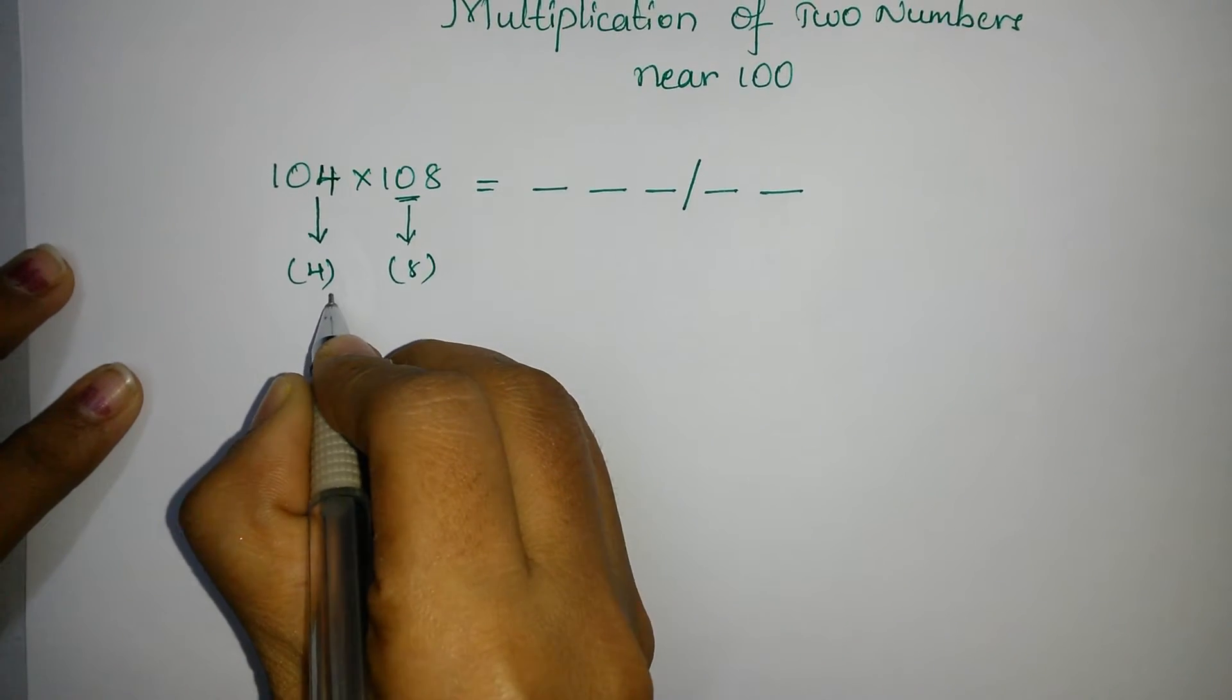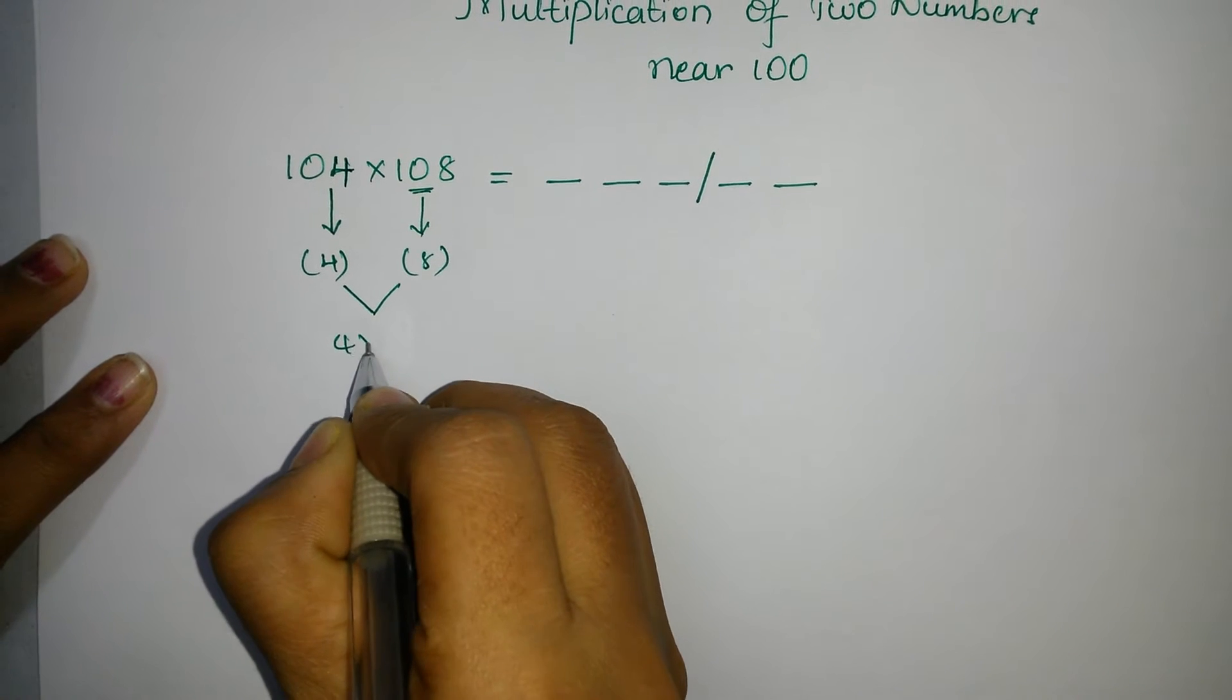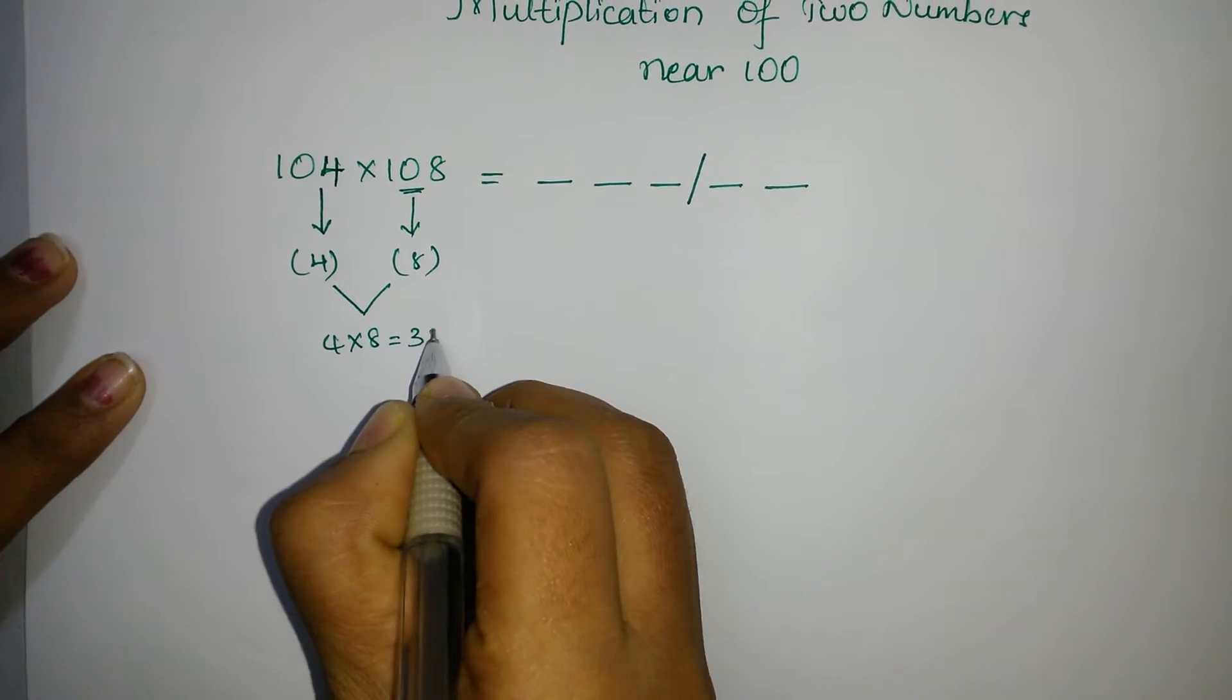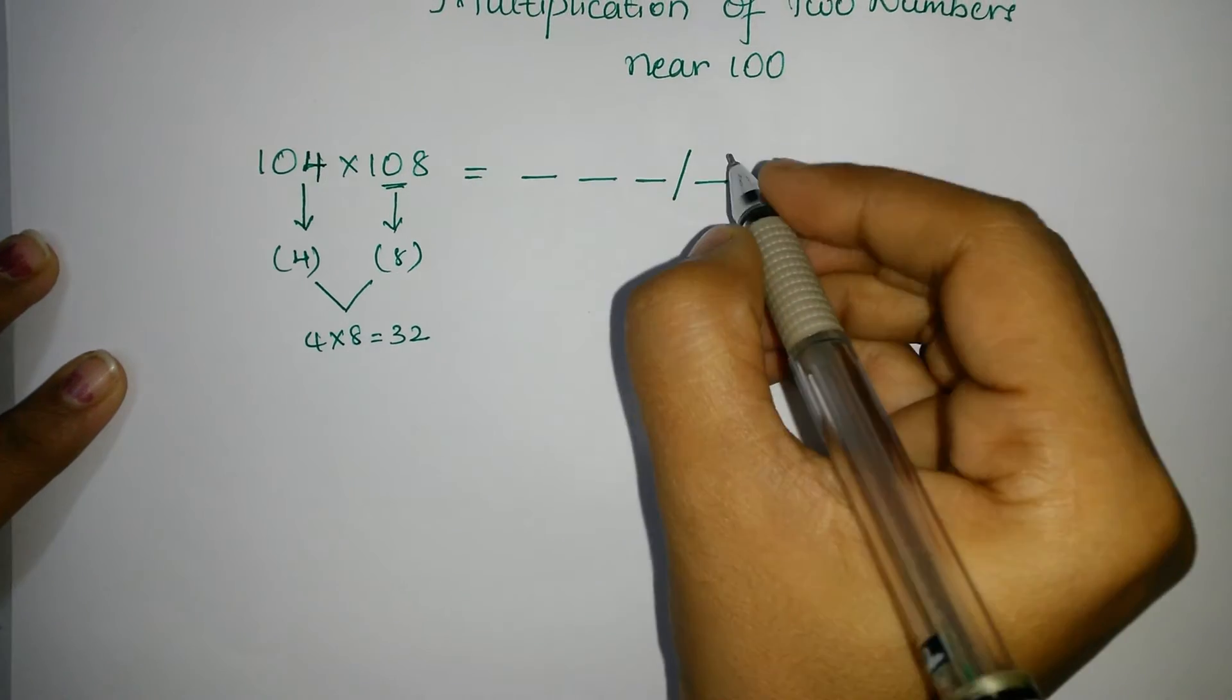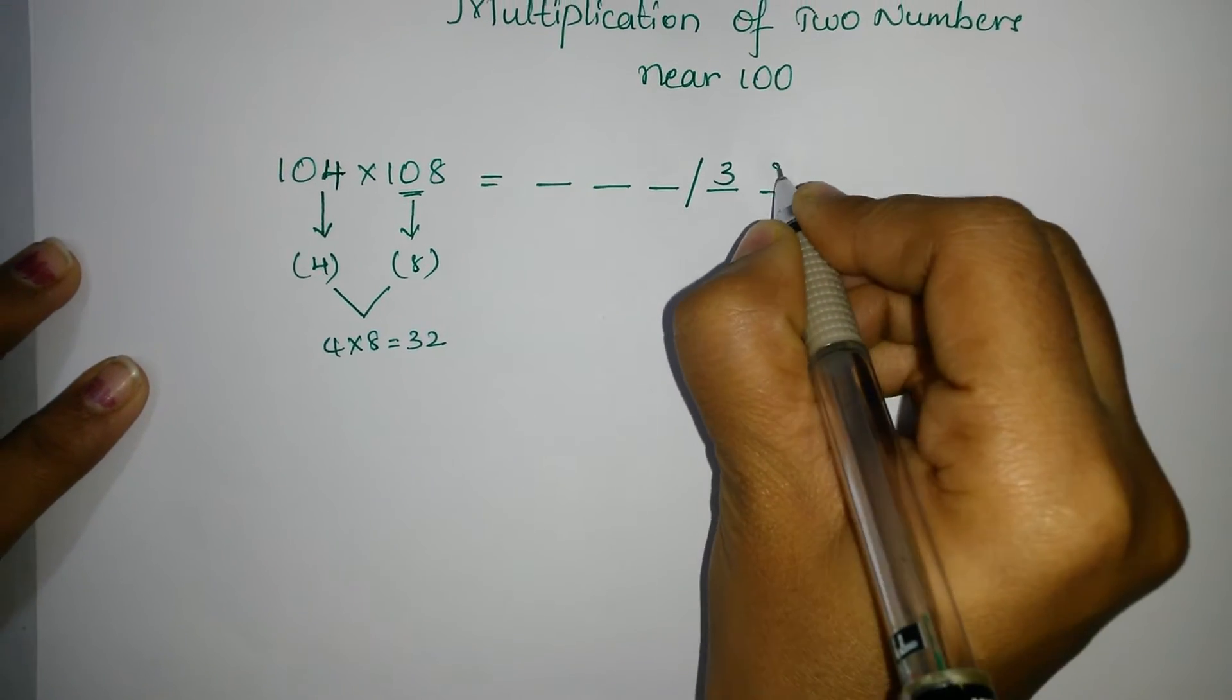So what you have to do is, you have to multiply these 4 into 8. 4 into 8 is equals to 32. Now, you have to write this 32 in your right part. This is 32.